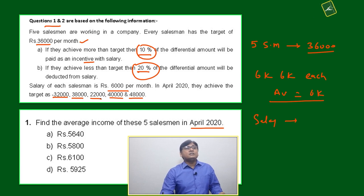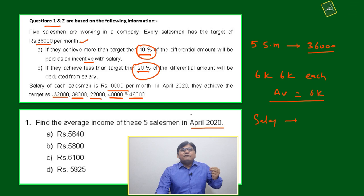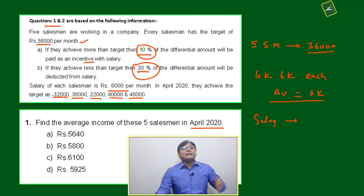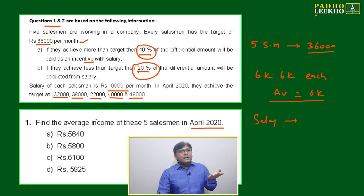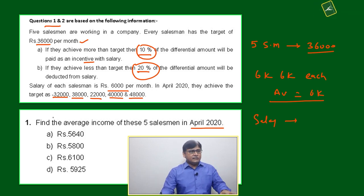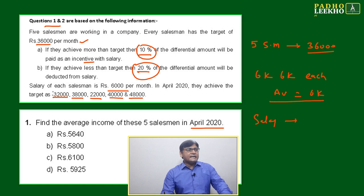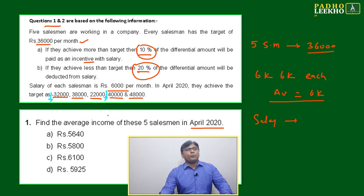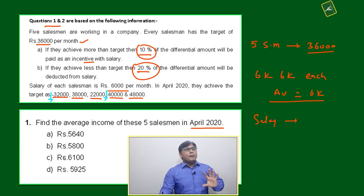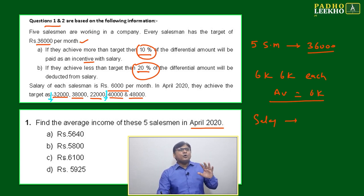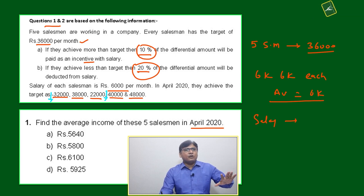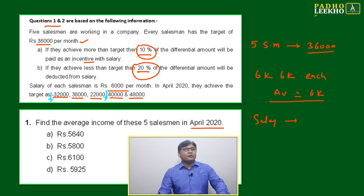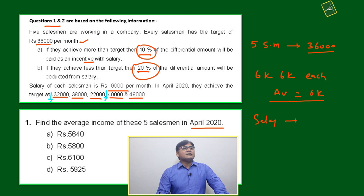But here, one salesman is achieving 32,000, another 38,000, another 22,000, 40,000, and 48,000 — they are achieving different targets, so their salaries will be calculated based on the conditions. First, we identify who is getting more than 36,000 and who is getting less. 32,000 and 22,000 are less; the other three are more. One thing is sure: the average will not go above 6,000 because two are less and three are more.